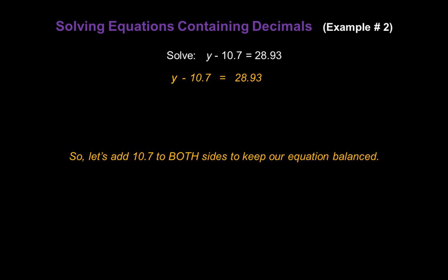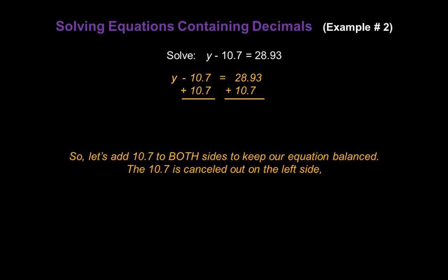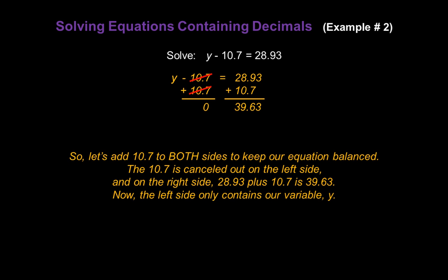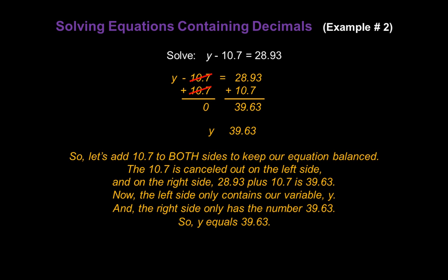So let's go ahead and add 10.7 to both sides to keep our equation balanced. I'll add 10.7 on the left and 10.7 on the right. The 10.7 is cancelled out on the left side — when we do that math, that number turns into zero. On the right side, 28.93 plus 10.7 is 39.63. The left side only contains our variable y, isolated on the left, and the right side only has the number 39.63. So y equals 39.63 is our answer.